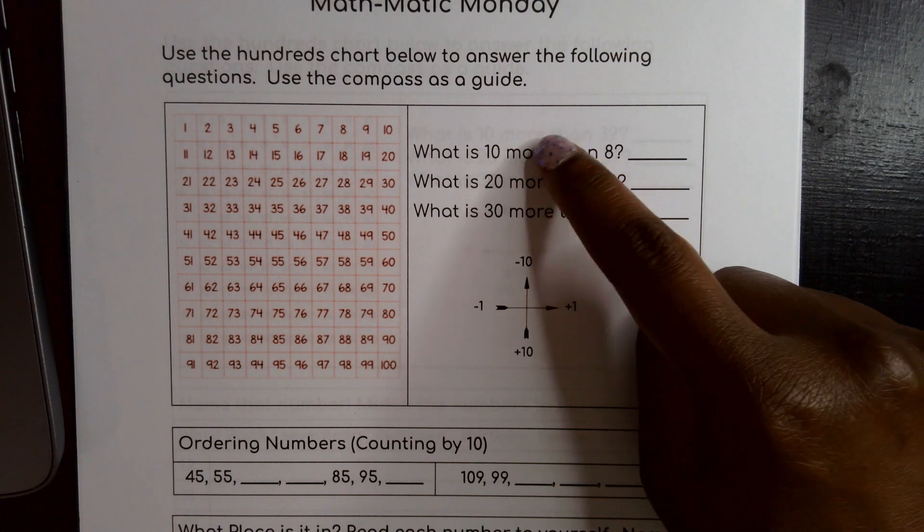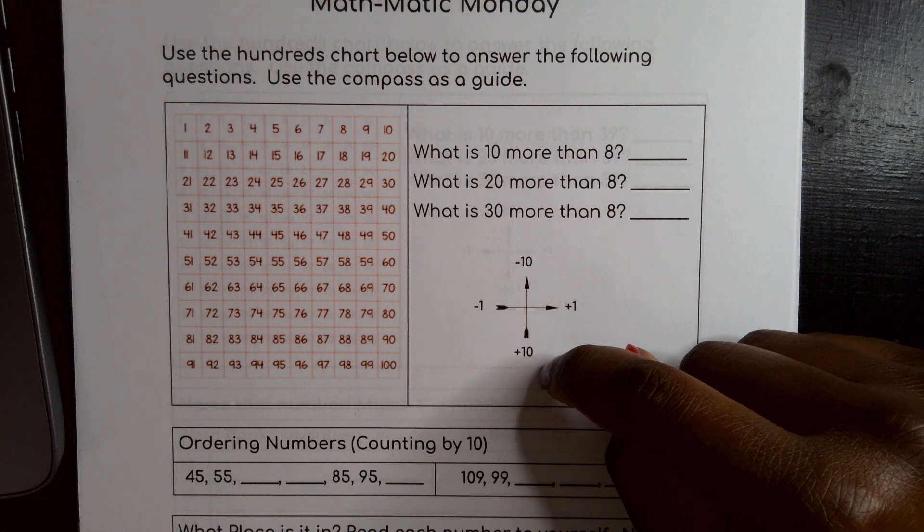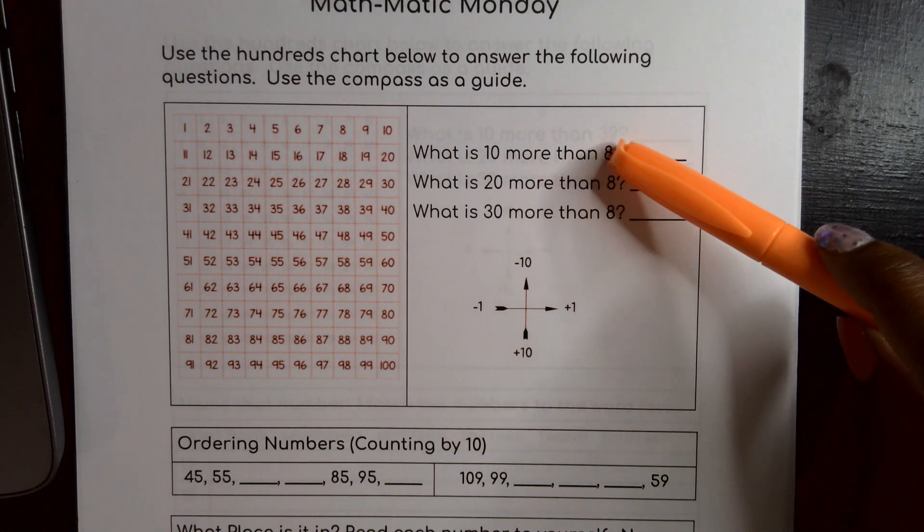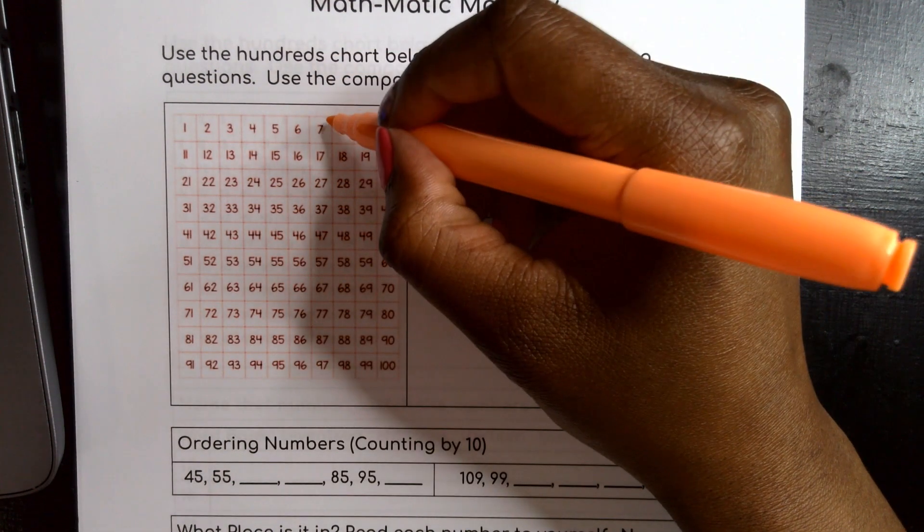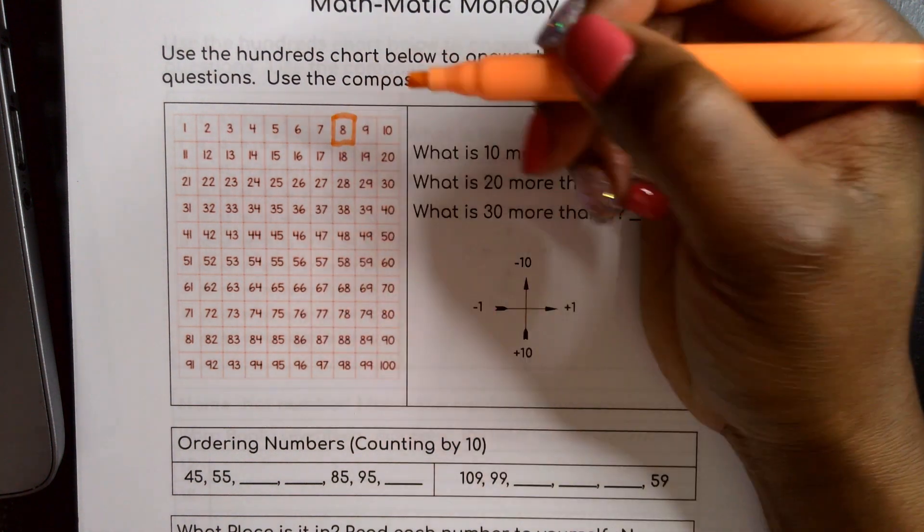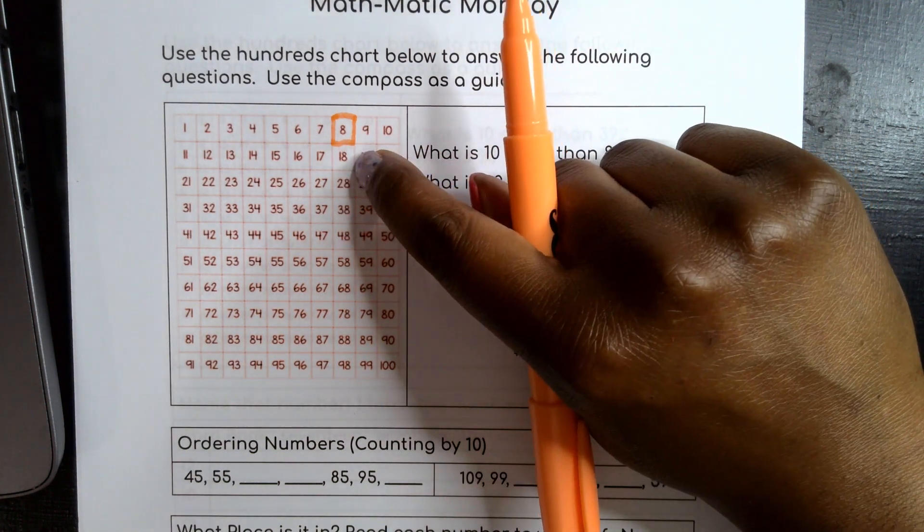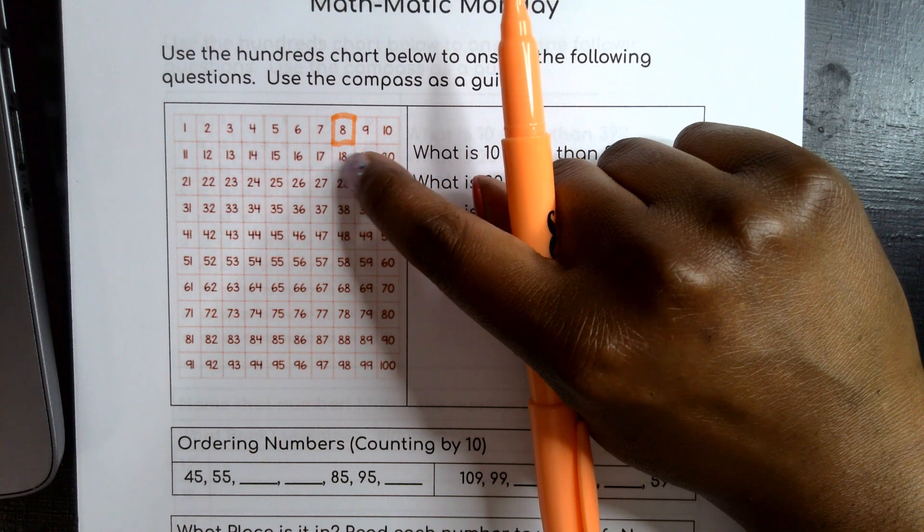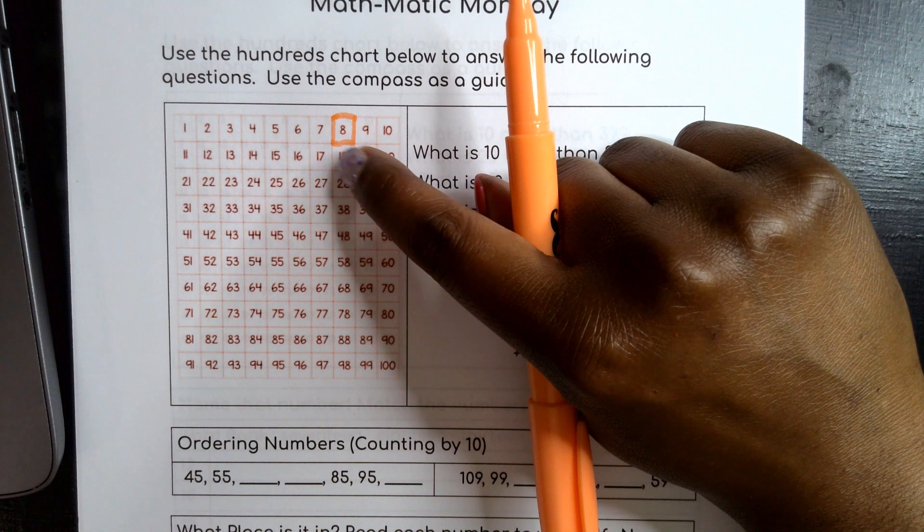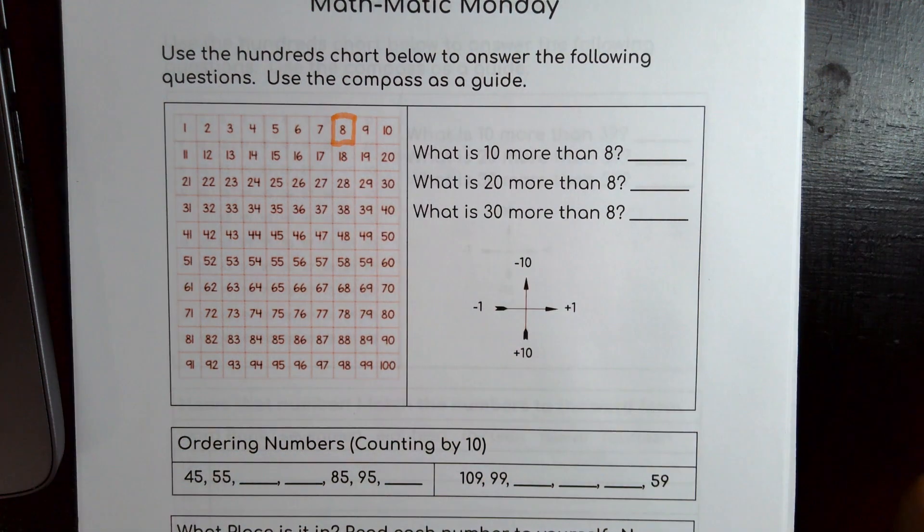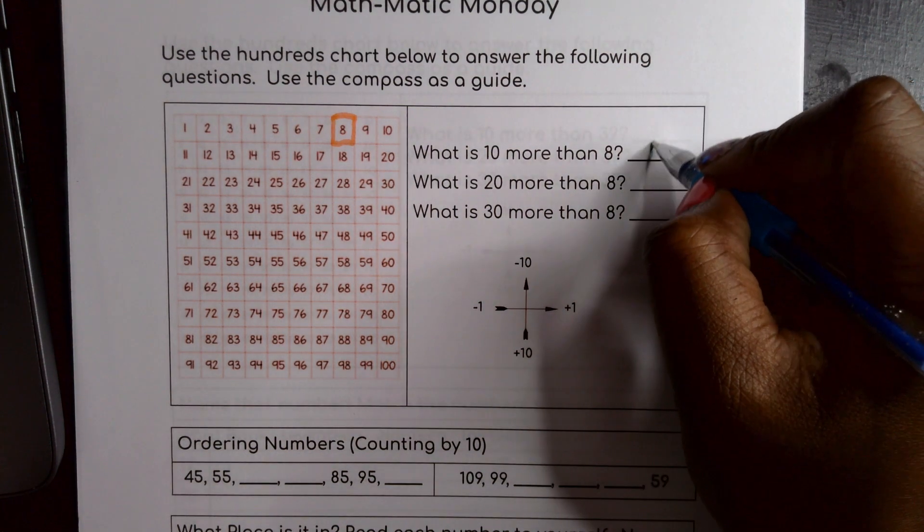So because all of these say more than I know I need to go down 10. So the first thing I want to do since all of them have the number 8 is I'm going to highlight the number 8. Right here. 8. Now based on my compass if I move down one row I have added 10. And if you look there is a 10 added to that 8. 10 plus 8 is 18. So I know here for my first answer I'm going to put the number 18. Did you get that right? Of course you did because you're a genius.